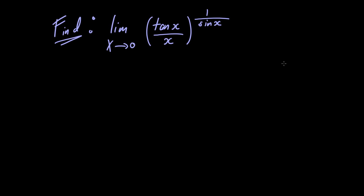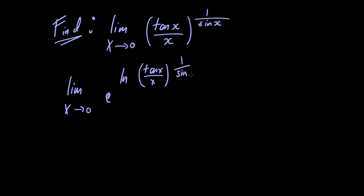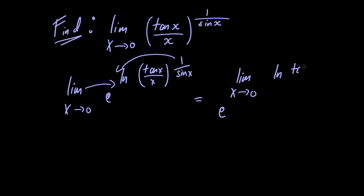Let's begin by rewriting the limit in the following form: the limit as x approaches 0 of e raised to the natural logarithm of tangent of x divided by x, all raised to 1 over sin of x. We can move the limit inside the exponential function since it is continuous, and we can use the power rule for the natural logarithm to bring this power down to the front. Doing so, we have e raised to the limit as x approaches 0 of the natural logarithm of tangent of x divided by x, all divided by sin of x.